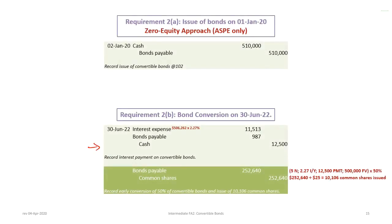Once interest is brought up to date, we record the conversion. We debit bond payable and credit common shares. The bond payable amount is 50% of the bond account value after the interest payment: using 5N, 2.2714 IY, $12,500 payment, $500,000 future value, times 50% — the same as $505,280 times 50%. Dividing by the $25 market price gives 10,106 common shares issued. So: early conversion, 50% of convertible bonds, issuing 10,106 common shares.